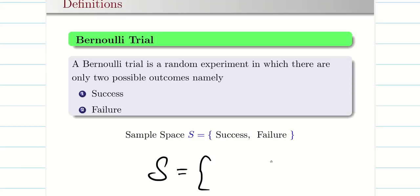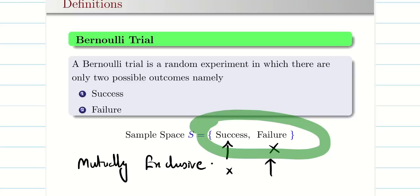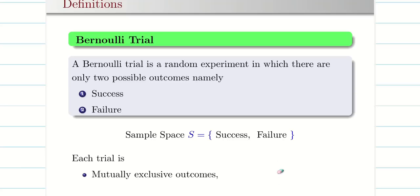In a Bernoulli trial, the sample space contains only success and failure. If success occurs, failure cannot occur, and vice versa — so these two are mutually exclusive. Since the sample space contains only success and failure and nothing else, the event covers the whole sample space, making it mutually exclusive as well as exhaustive. So in every Bernoulli trial, the outcomes are mutually exclusive as well as exhaustive.